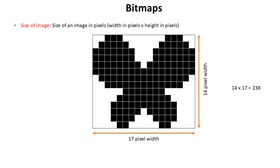Here we have a black and white bitmap image of a butterfly. Every single dot of colour is referred to as a pixel. The size of this bitmap is the number of pixels — we take the total width and the total height of the image in pixels and multiply them together, so the size of the image is 238.